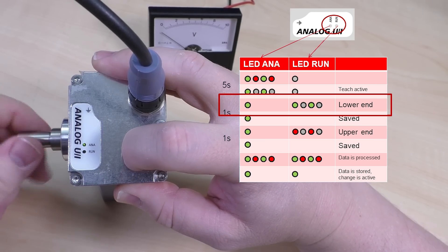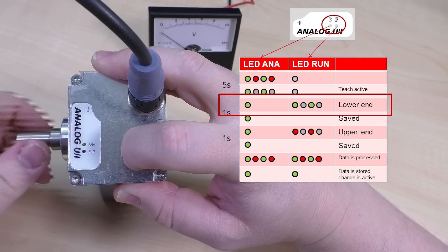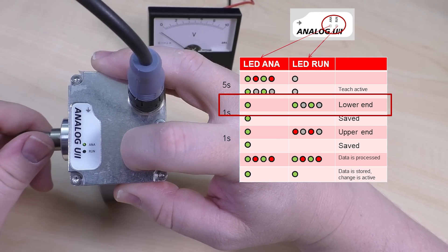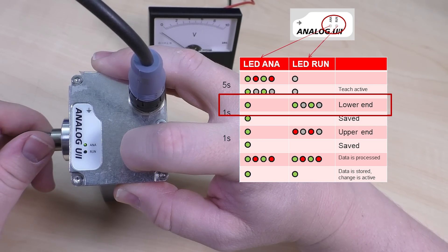The run LED will be flashing green indicating that you're ready to program the start position. Move the machine axis to the desired start position and press the button once.